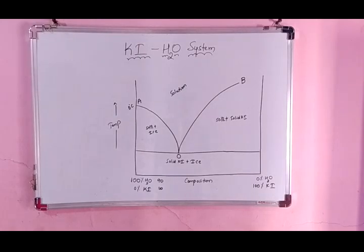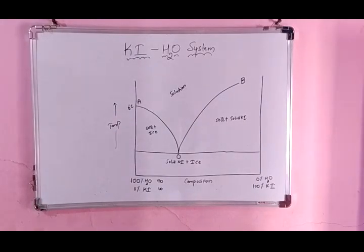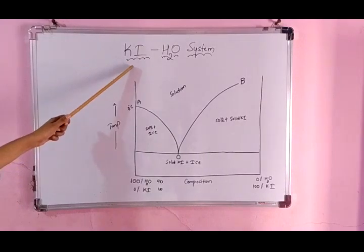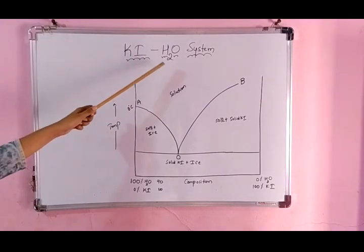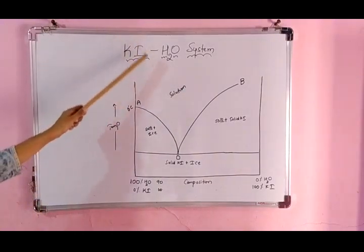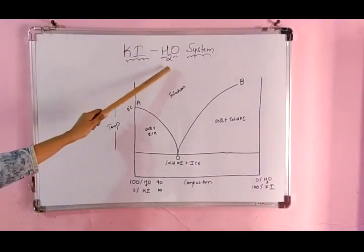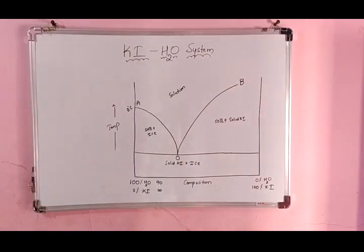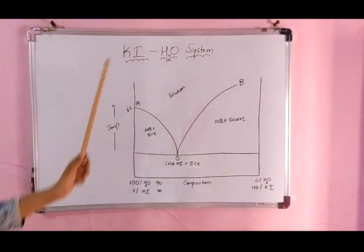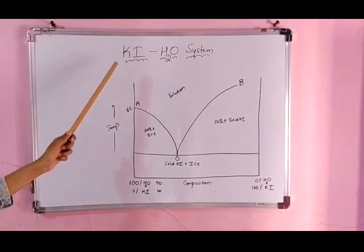Hi, hello, this is Shweta. Welcome to my classes. Today we will deal with the KI-H2O system. That is a two-component system. So here KI is one component and H2O is the other component. It is also called as a salt water system, because KI acts as a salt here.